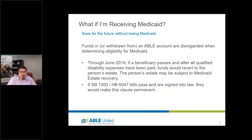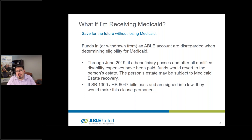One of the key features of ABLE accounts is how they interact with Medicaid, a government benefit with an asset limit of $2,000. Generally speaking, funds in or withdrawn from an ABLE account are disregarded when determining eligibility for Medicaid, which is great news. There was a caveat that if a beneficiary passed away and after all outstanding qualified disability expenses were paid — including funeral and burial — those remaining funds could be subject to Medicaid recovery.